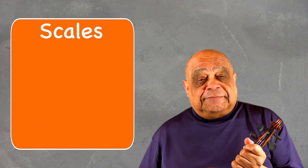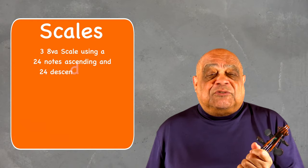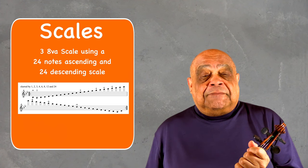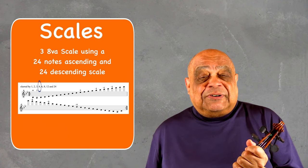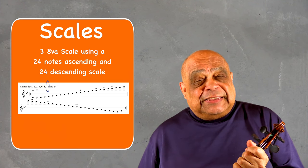Second on my model's list is scales. So start with three octave scales using 24 notes ascending and 24 notes descending. Do this one note to a bow then two, three, four, six, eight, twelve and finally twenty four.